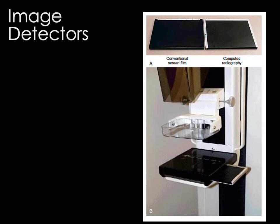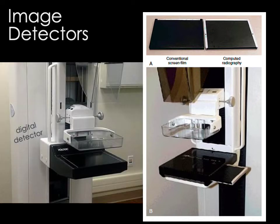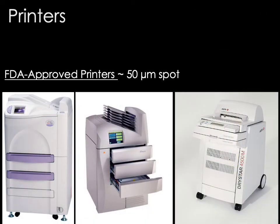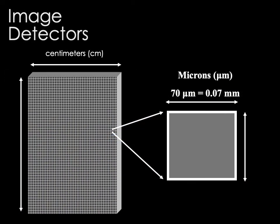As for the image detector, a CR cassette or film can be slid into the side of the breast support, but these days most mammography detectors are digital. Mammography also has specialized printers that allow mammograms to be printed onto film at high resolutions of about 50 microns, though the FDA requirement for facilities to have printing capability has gone away. Because of the need for high spatial resolution, digital detectors used in mammography typically have a pixel size of 70 microns — about half the size used in digital detectors for general radiography.